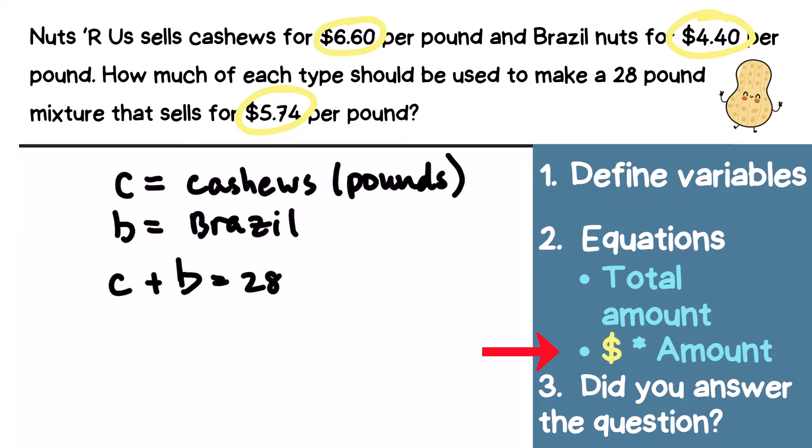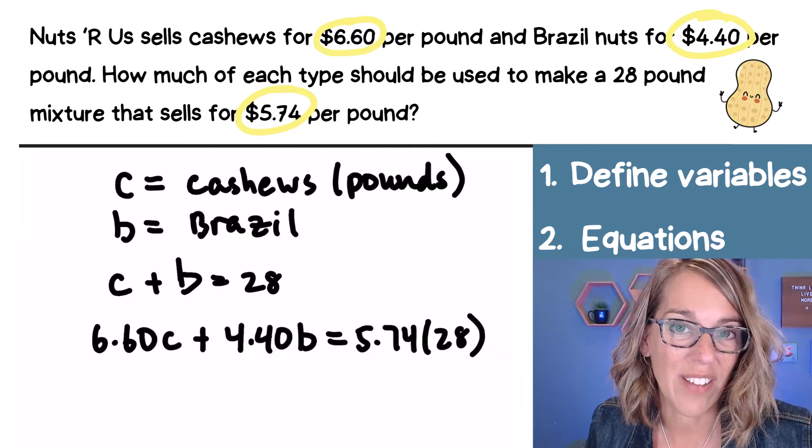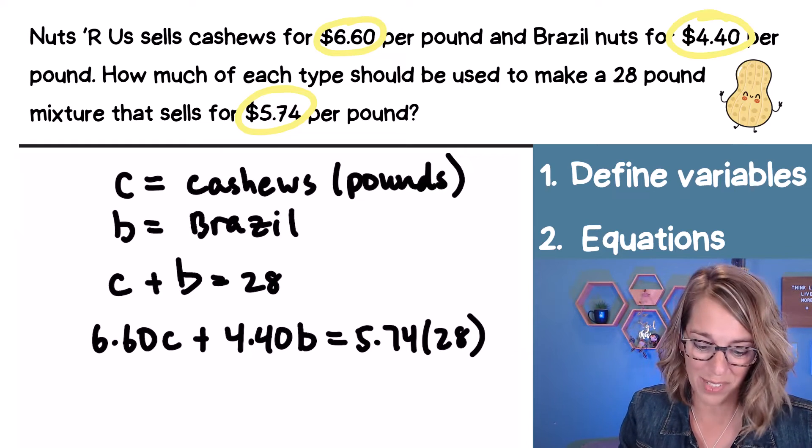The next equation would have been percent times amount. But in this case, I've got dollar amounts. So it's going to be the dollar amount times each of those quantities. So as I put this together, the cashew nuts are 660 a pound. So 660 times the number of pounds that we have. So it's going to be $6.60 times the number of pounds of cashews, plus it's going to be dollar times amount. So 440 times the amount of Brazil nuts that we have, which is B is equal to, I need another dollar times amount. That's going to be 574 times 28. So I've got my system of equations, and I'm ready to solve this by substitution.